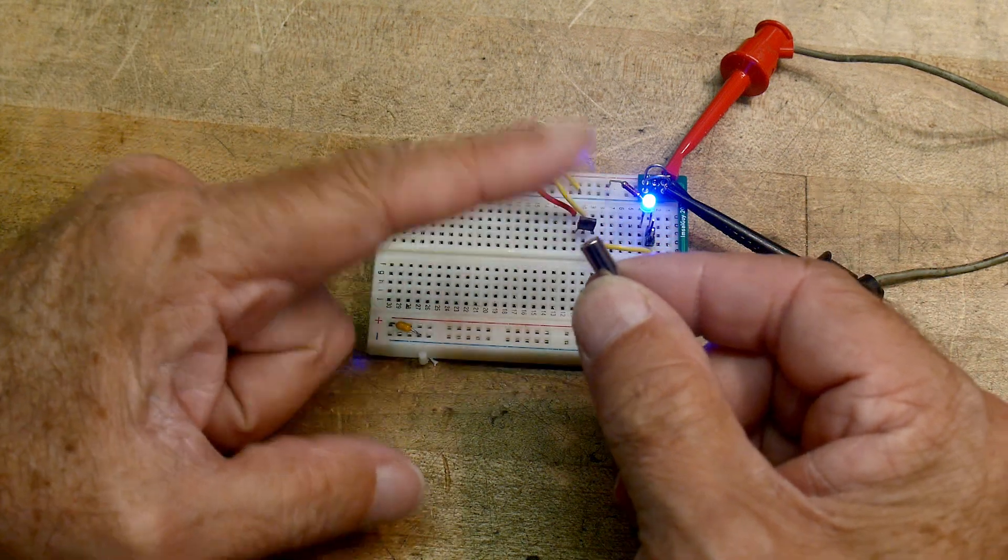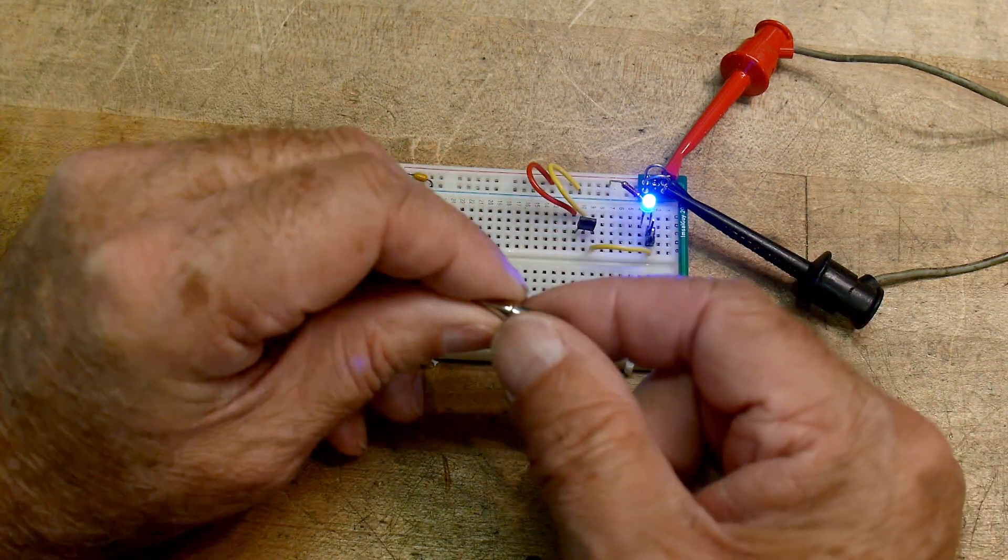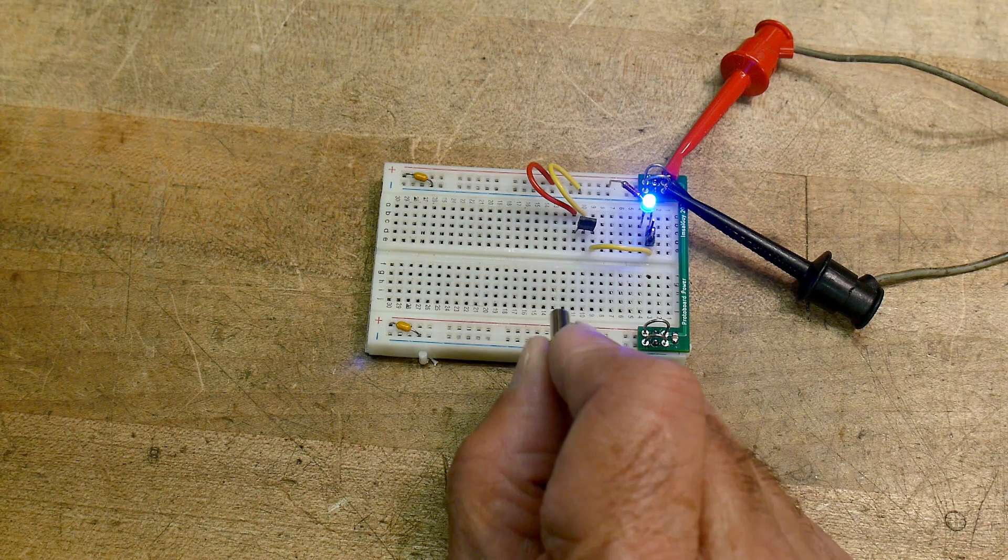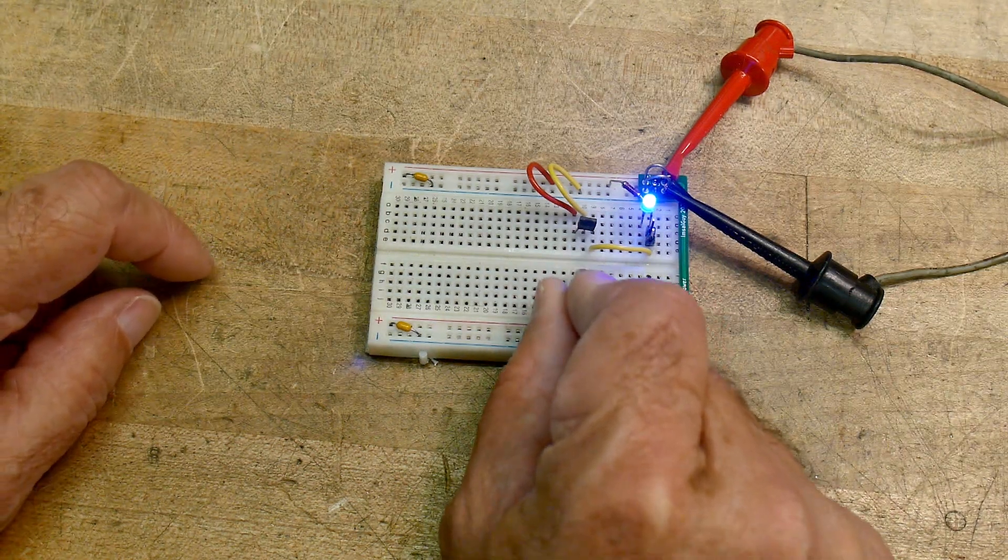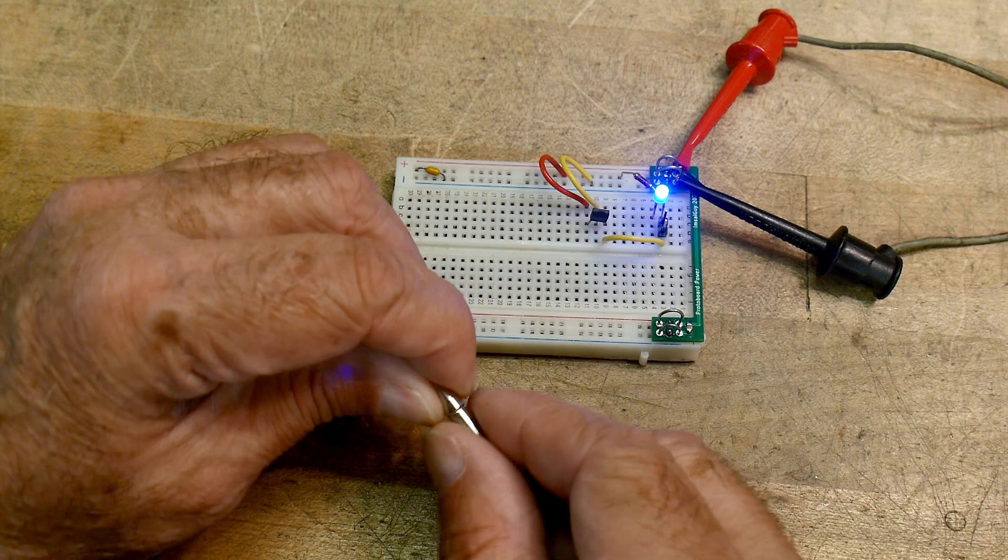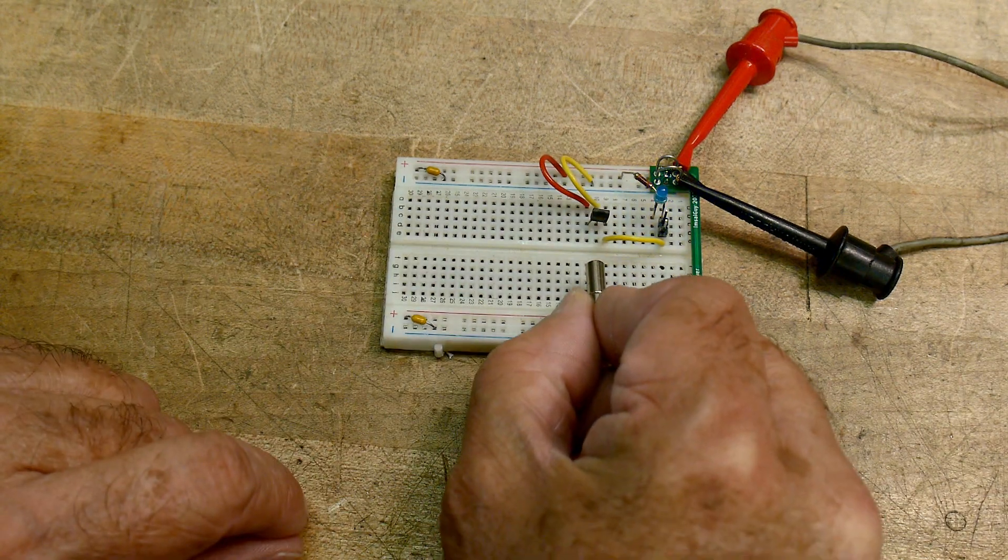Magnets are going to have a pole on one side and a pole on the other side. So one's north, one's south. So if I bring this in, you see that nothing happens. If I turn it around and have the other pole come in, it switches.